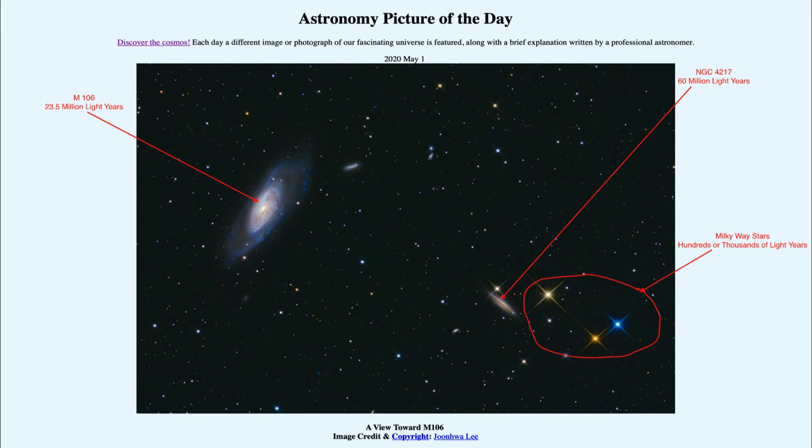And as you look around the image you may see some other galaxies as well which could be even more distant galaxies well out beyond the 60 million light years for NGC 4217.